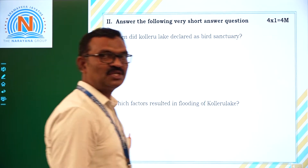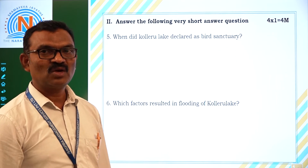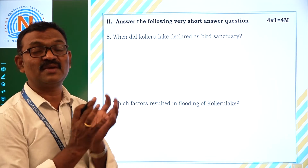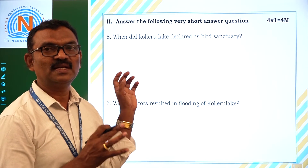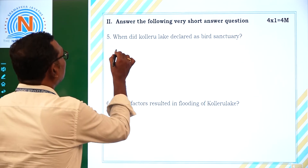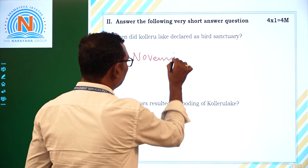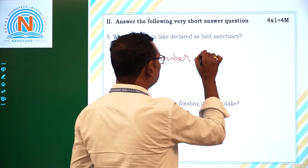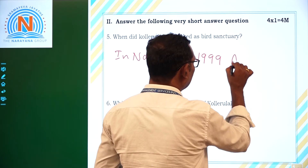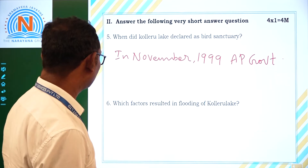Now the very short answer questions. When was Collier Lake declared as a bird sanctuary? Collier Lake attracts around 20 lakh birds every year from different countries. That is why it was announced as a bird sanctuary. In November 1999, the AP government declared it as a bird sanctuary.